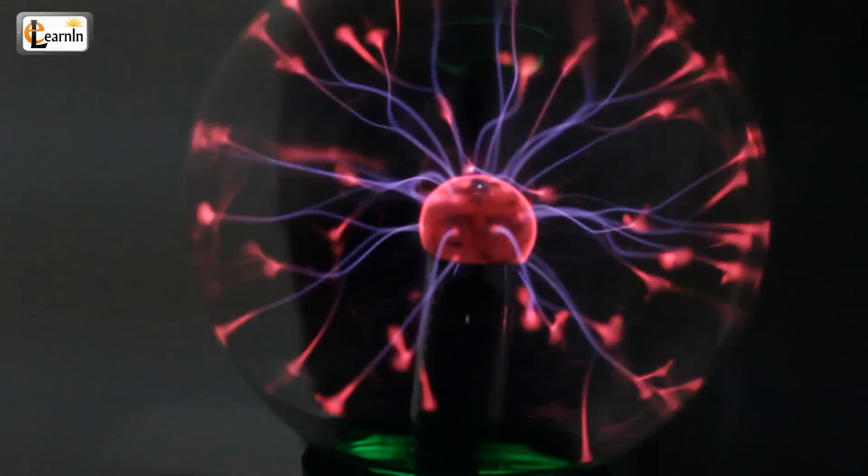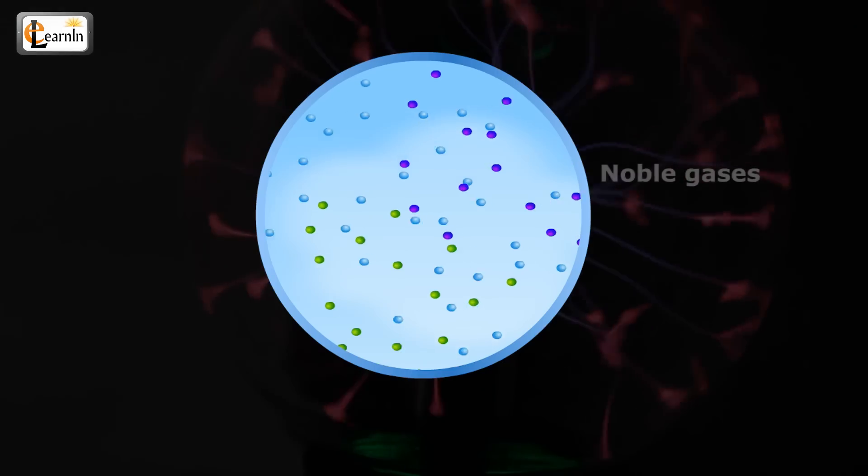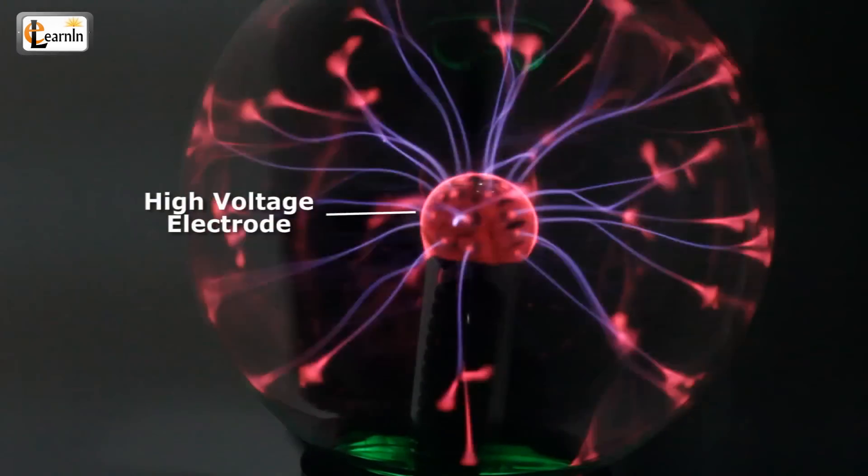Explanation: A plasma lamp is a clear glass filled with a mixture of various noble gases, with a high-voltage electrode.